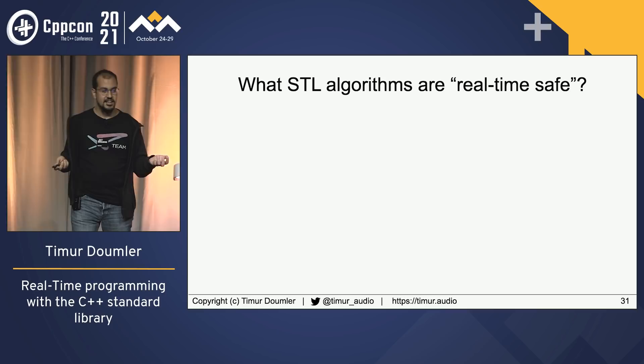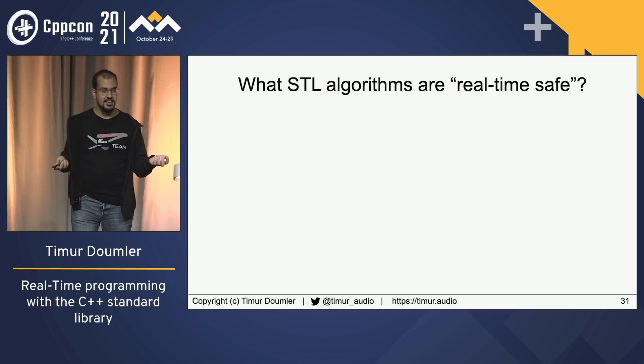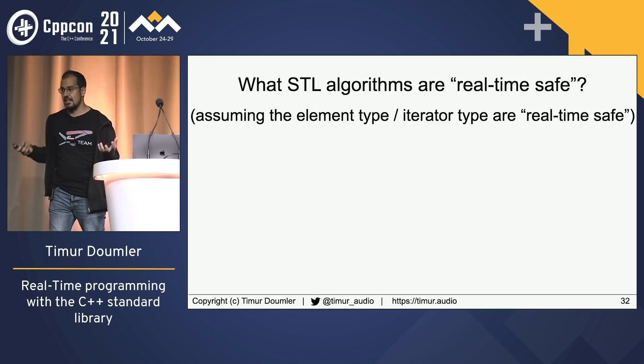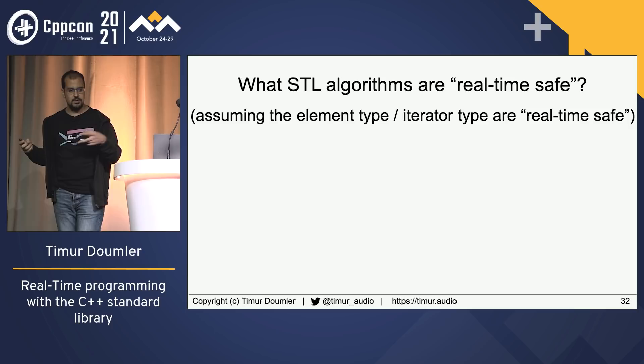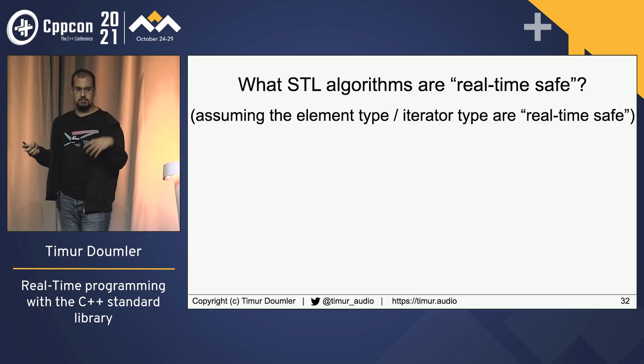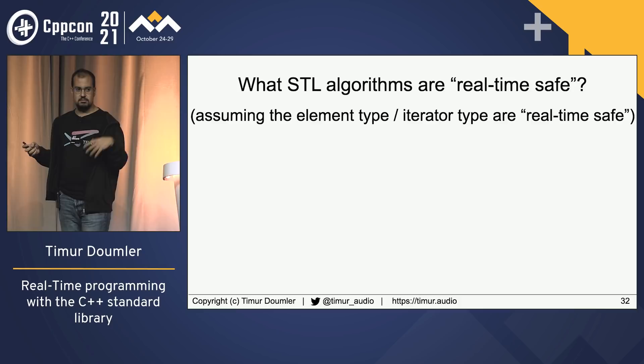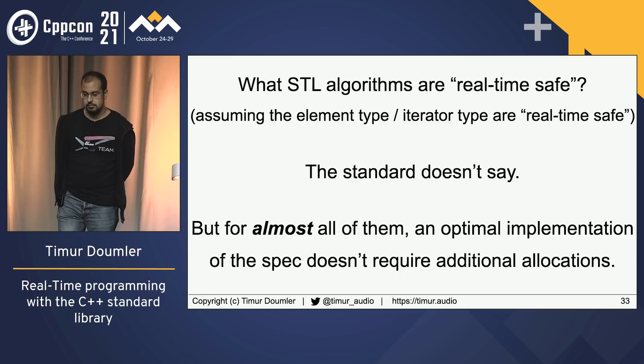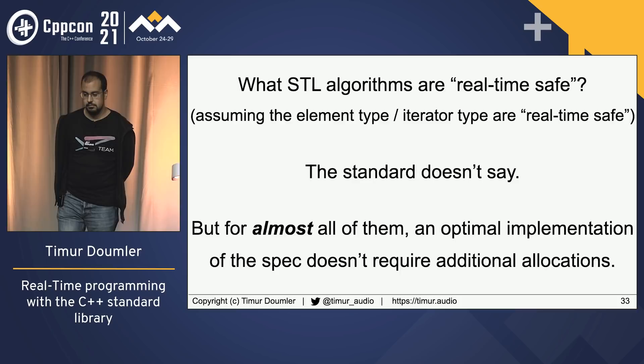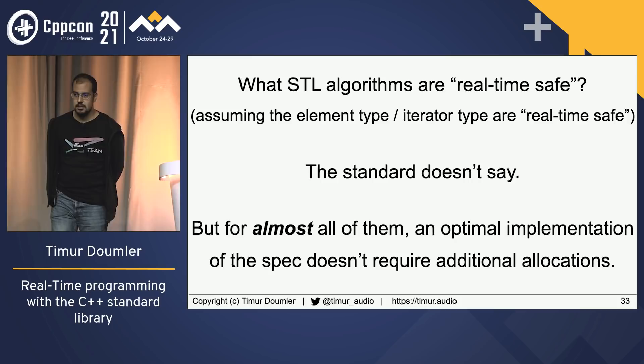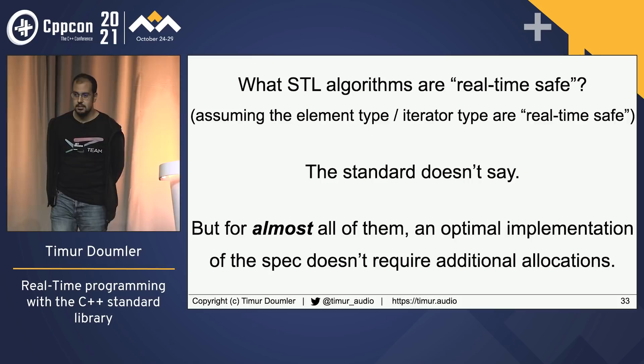By 'real-time safe' I mean the algorithm itself — obviously if the element type is std::string you'll have allocations, or if the iterators are vector back-inserters or ostream iterators, that's not real-time safe. But if you're dealing with ints, is the actual algorithm — the loop inside — going to allocate memory? The standard doesn't say, of course. But for almost all standard algorithms, an optimal implementation of the specification does not require additional allocations, so you can assume they won't be there.